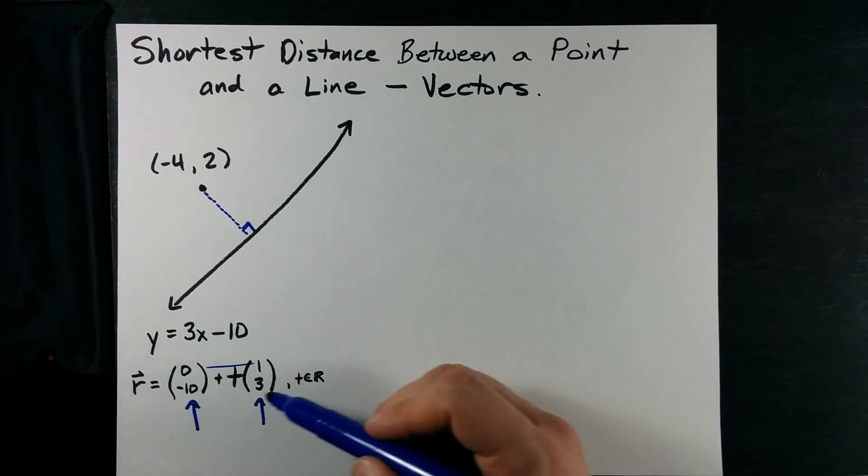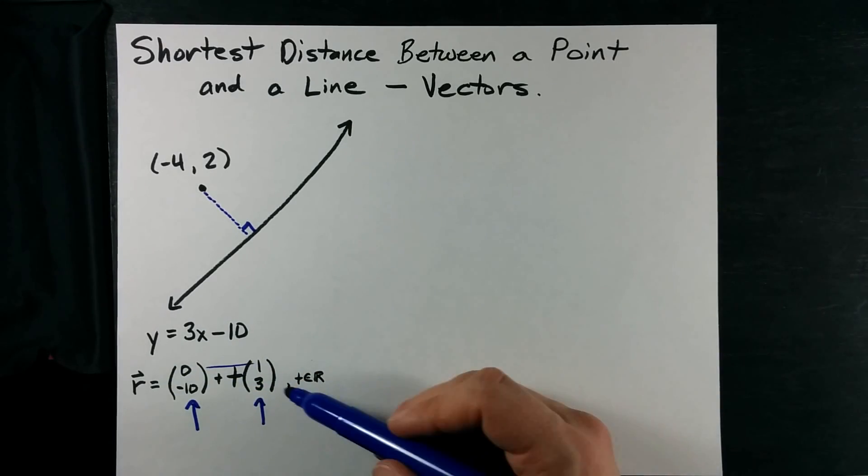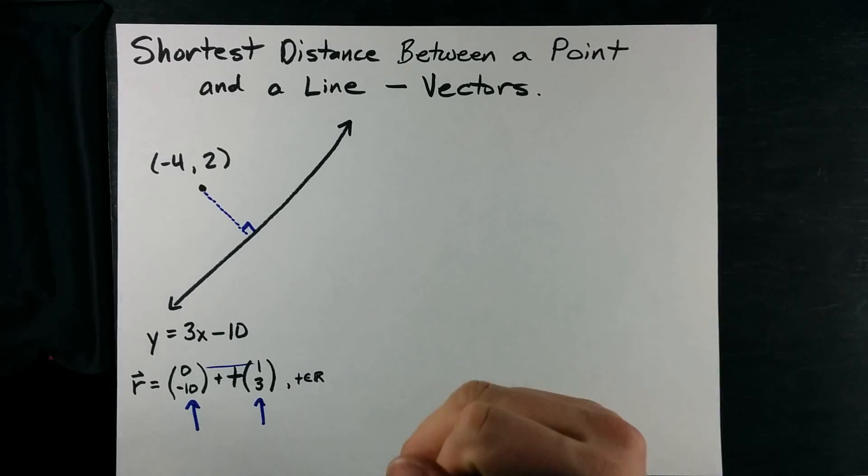This is my vector equation of the line. This is my parameter t.